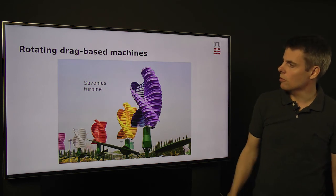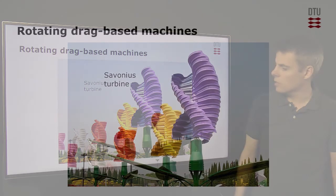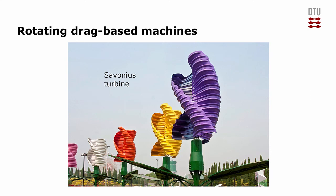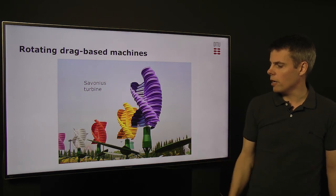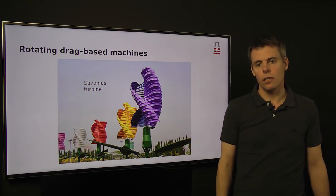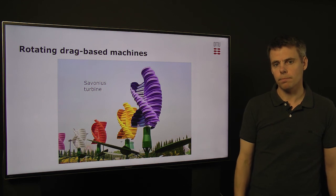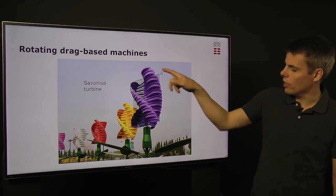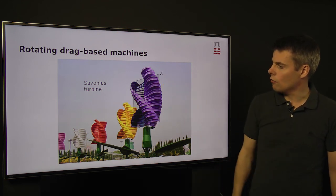The rotating drag-based machine, the most well-known, is the Savonius. It has the benefit of being able to extract energy from the bottom, but also that it is a quite safe turbine and can be mounted in urban areas. The swept area is also given by the geometry of the rotor.